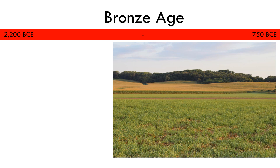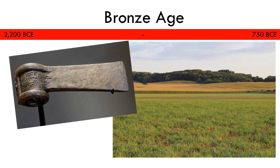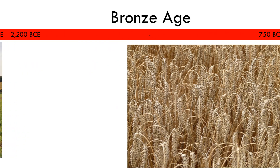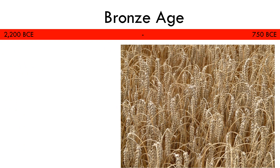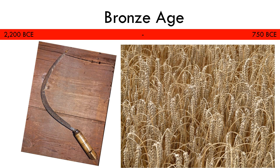Farming was made easier with these metal tools. The Bronze Axe made cutting down trees easier to clear fields, and the Bronze Sickle made it easier to cut down the growing crops.